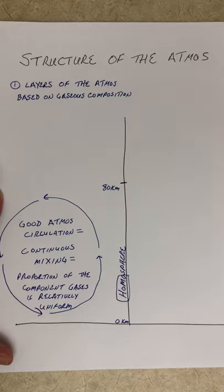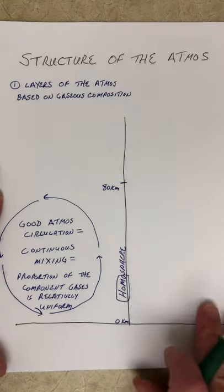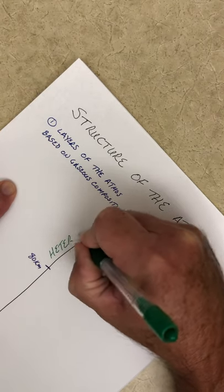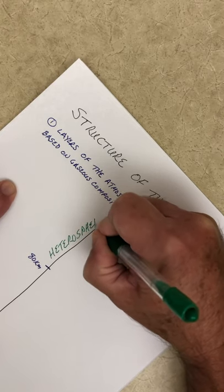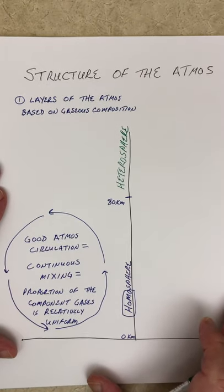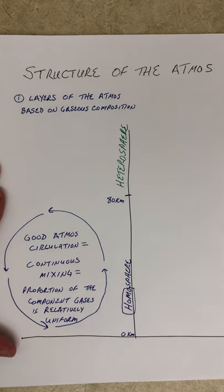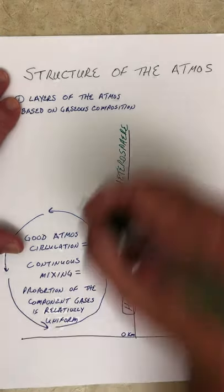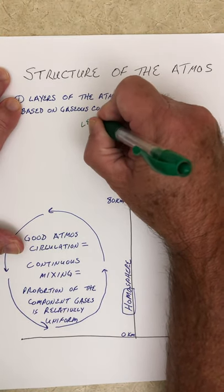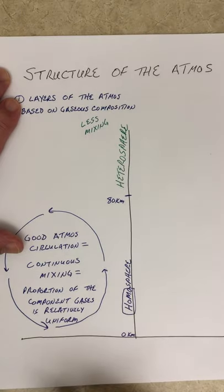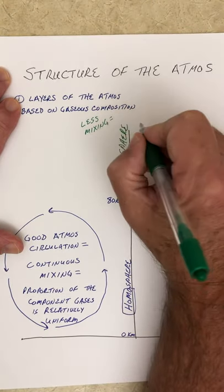Above the homosphere, we have something called the heterosphere. Above 80 kilometers, we find the heterosphere, where the gases are not nearly as well-mixed. As a result, we're going to find that we get gases that are more layered in shells. In the heterosphere, there is less mixing — the atmospheric circulation is not as great.